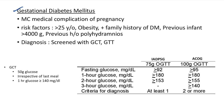Gestational diabetes mellitus (GDM) is the most common medical complication of pregnancy. Risk factors include age greater than 25 years, obesity, positive family history of diabetes mellitus, previous infant with birth weight greater than 4000 grams, and previous history of polyhydramnios.